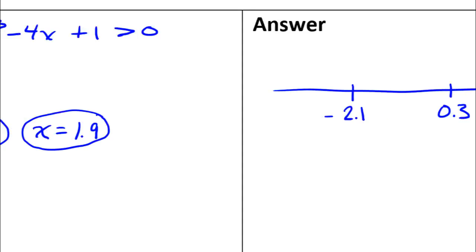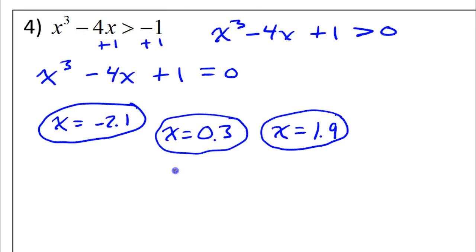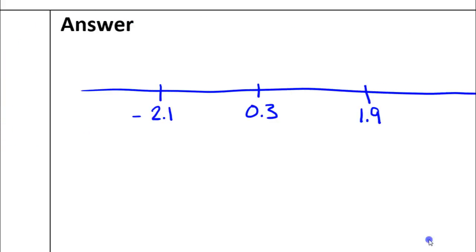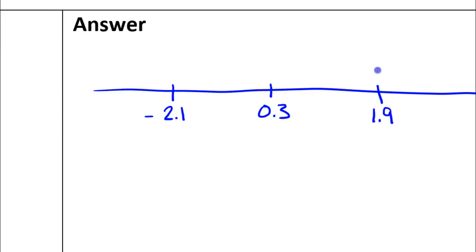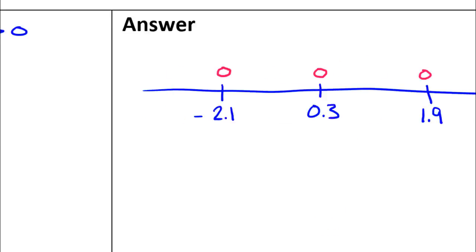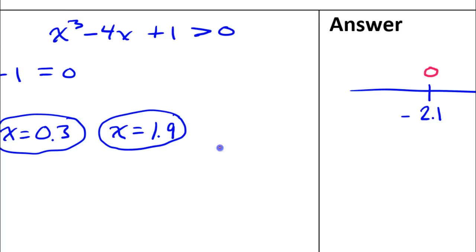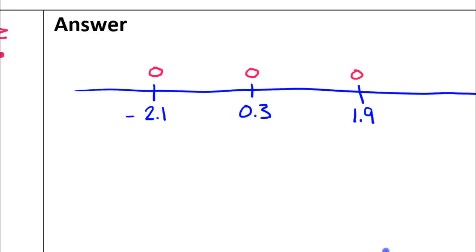And, this time, we want to know where the function is greater than zero, but not equal to. So, these are the points where the function equals zero. So, they are not to be included. So, we're going to use open circles to represent them. If you have a greater than sign like this, then it's an open circle. If it had been, for example, greater than or equal to, then you would have had a closed circle.